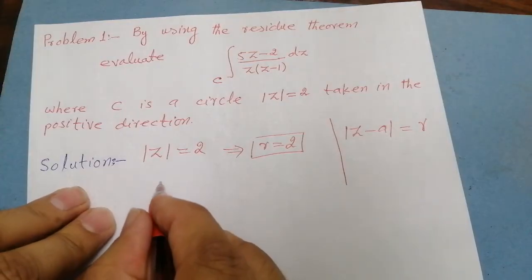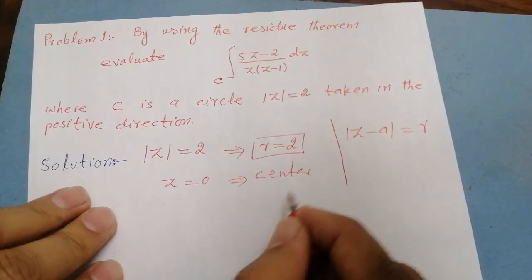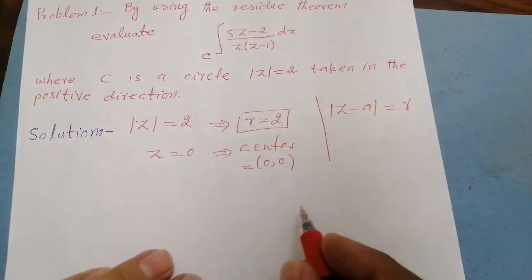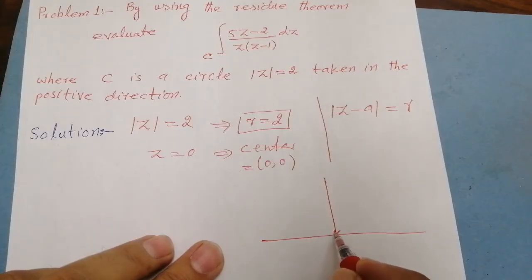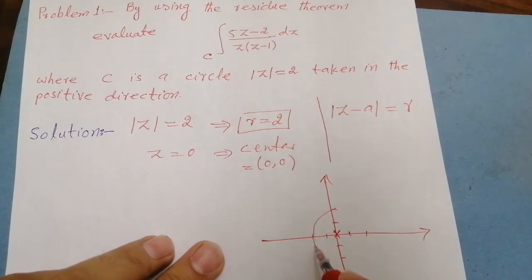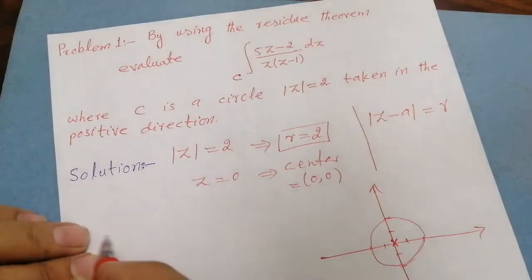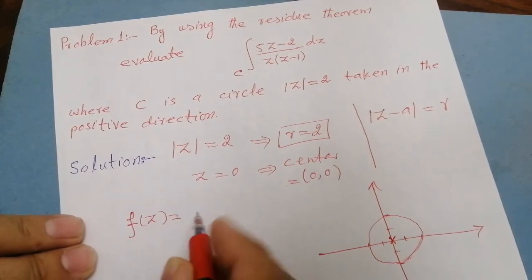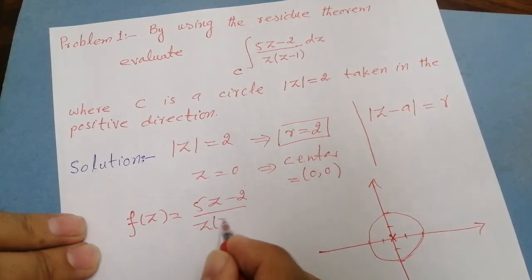The center in this case is (0, 0). Drawing this circle: the center lies at the origin, with the real axis and imaginary axis shown. The radius is 2, so the circle passes through ±2 on both axes. The function f of z in this question is (5z minus 2) divided by z(z minus 1). We have to find the residues, and for that we need the singular points.